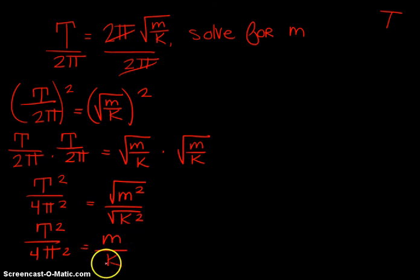Cool. Now I really want m by itself, so I'm just going to multiply each side by k. If I do that, I get m equals k times period squared all over 4π squared.